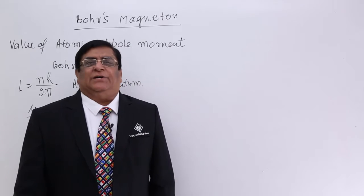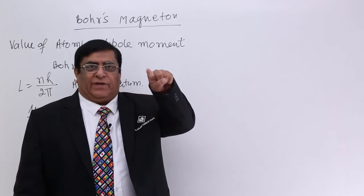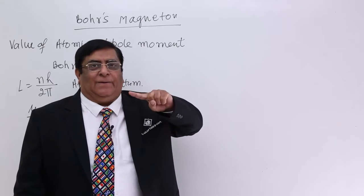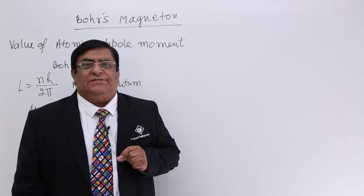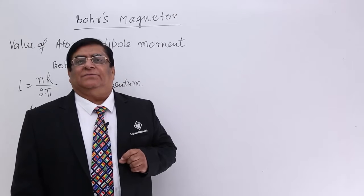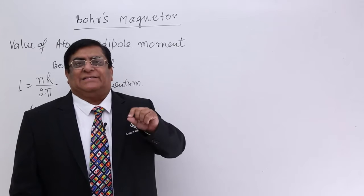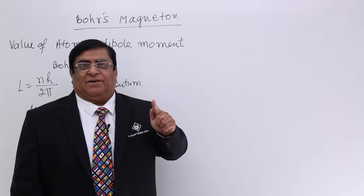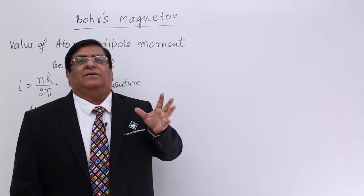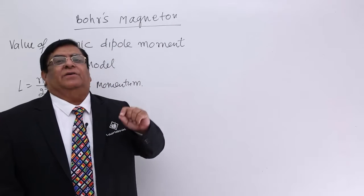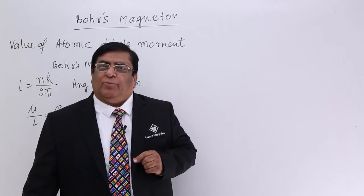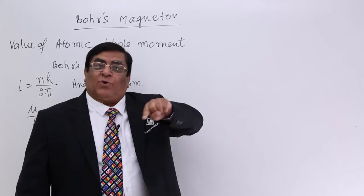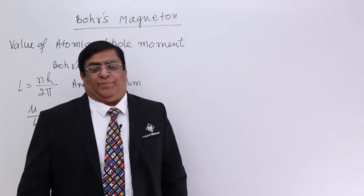When electric current is flowing in a coil that is in a circle, it produces a magnetic field. It has a magnetic dipole moment, just like a bar magnet has, or just like an electrical dipole has an electrical dipole moment. Similarly, a magnet has a magnetic dipole moment and this coil has a magnetic dipole moment.